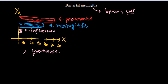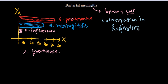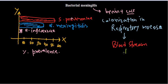In all forms of bacterial meningitis, the causative pathogens are typically normal residents of the respiratory mucosa or respiratory tract. Colonization begins in the respiratory tract, and from there the bacteria move into the bloodstream. Once in the bloodstream, they start to thrive and eventually reach the brain.